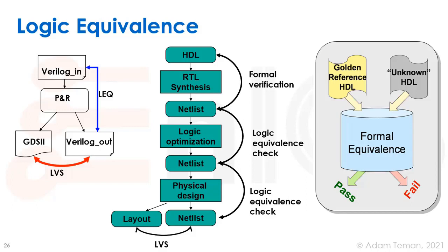The next part to discuss is logic equivalence. Basically, what we've shown in our whole flow throughout the course is: we take a high-level hardware language definition — say a Verilog file — run synthesis, run place and route, and get a layout and netlist at the end. To make sure the layout and netlist are the same we run LVS, but how do we know the Verilog netlist we got is the same as the RTL we started with, on which we ran all our logic verification?